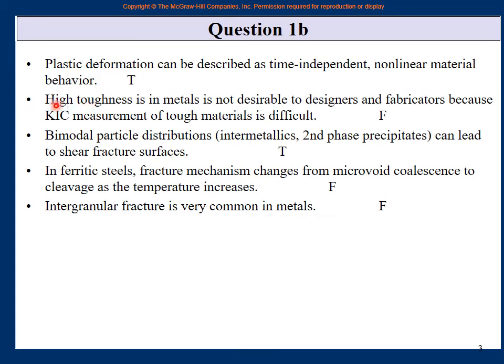Number two: High toughness in metals is not desirable to designers and fabricators because K1c measurement of high toughness material is difficult. The main sentence is K1c measurement of high toughness materials is difficult - yes, this is true. But high toughness is not desirable by designers? Absolutely untrue. Whenever designers and fabricators need metals, they would want it to have as much high toughness as possible because that is what we need for design and manufacturing. The other side is that if it is a high toughness material, its K1c measurement will be very difficult. So false.